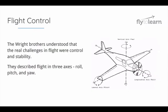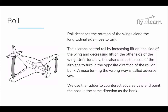One reason the Wright brothers were so successful is that they understood the real challenges in flight were in controlling the plane and keeping it stable. They described flight in three axes and the corresponding motions as roll, pitch, and yaw. Rolling describes the rotation of the wings along the longitudinal axis, nose to tail on the aircraft — similar to twisting a doorknob. The control surfaces that control roll are ailerons, and they do this by increasing lift on one side of the plane and decreasing on the other. Unfortunately, this also causes something called adverse yaw, which is when the nose of the airplane turns in the opposite direction of the roll or bank. We use the rudder to counteract adverse yaw and point the nose in the same direction as the bank.